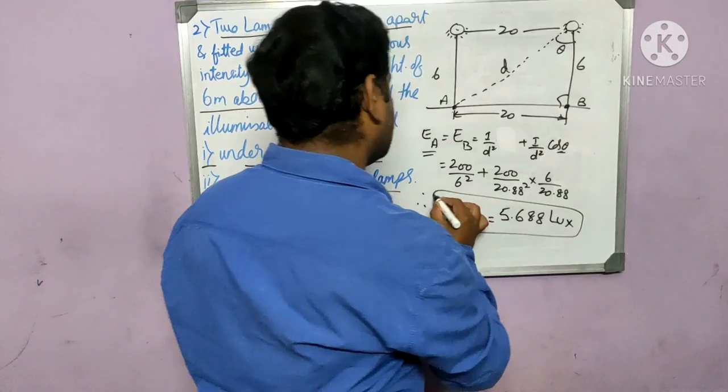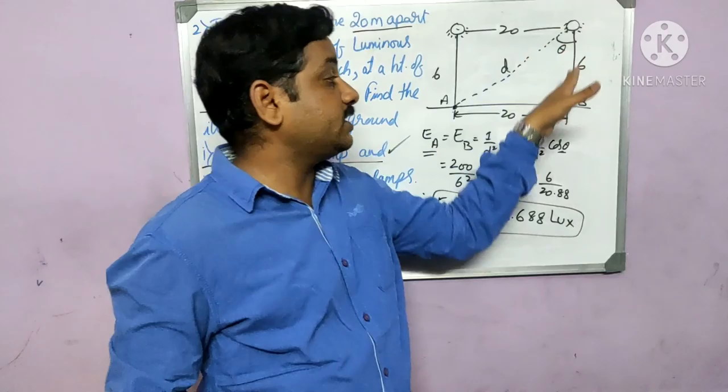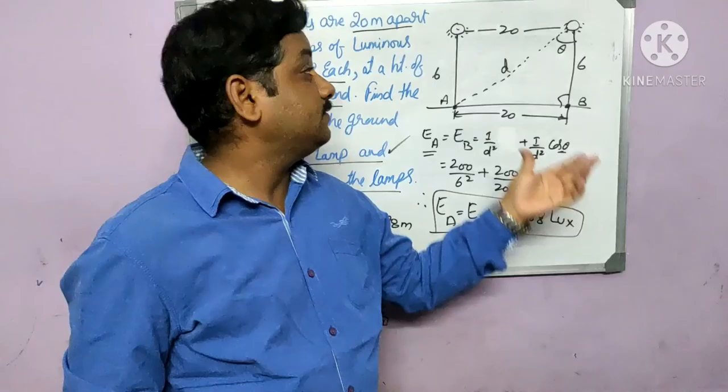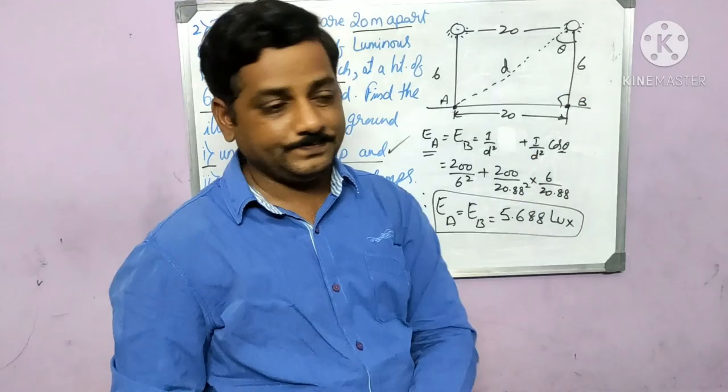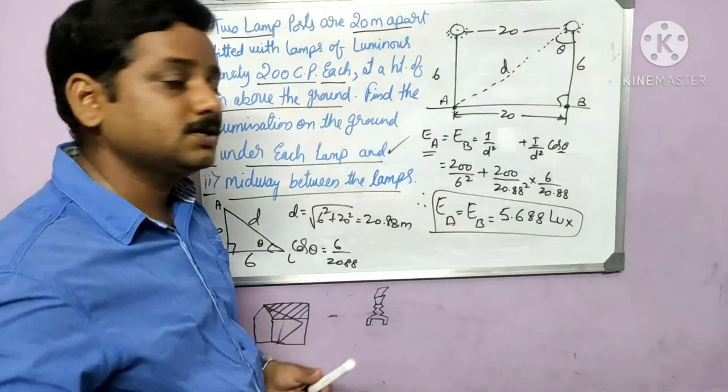This is the answer for Case 1. There is no need to recalculate for point B since both lamps are of the same candle power and at the same height, giving the same illumination at both points. If the lamps were of different capacities, the illumination at A and B would differ.